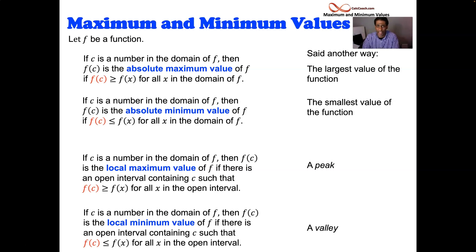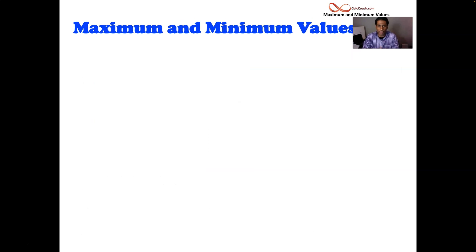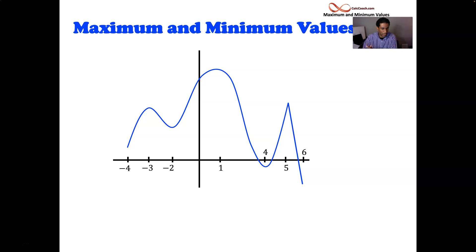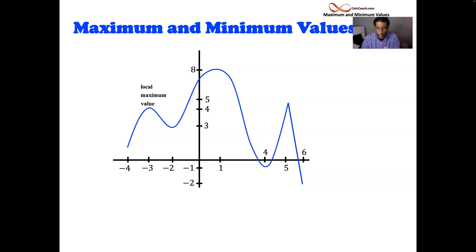Let's take a look at a graph. We have a scribble function, and we're going to label some points on here. Let's first look at the important x values — I'm going to mark them off, give them some numbers, and their associated y values. First up, at x equals negative 3, we have a local maximum value — it's a peak. The actual value is equal to 4, and it occurs at x equals negative 3.